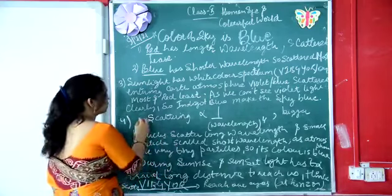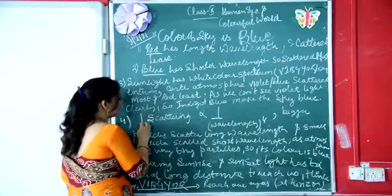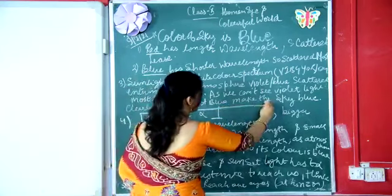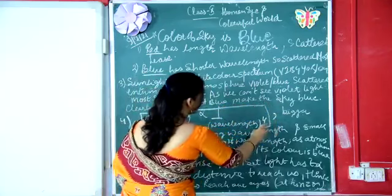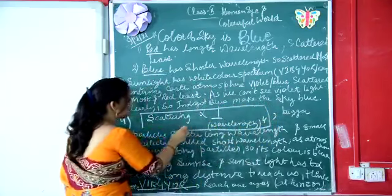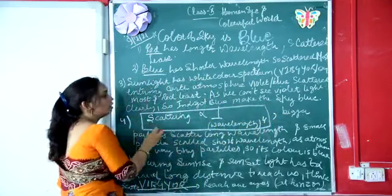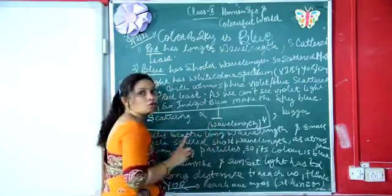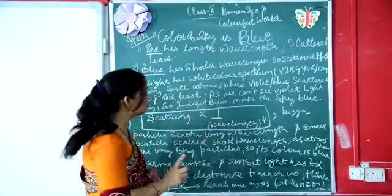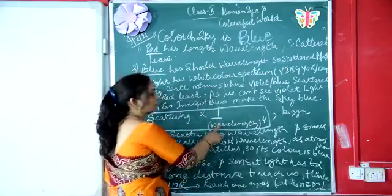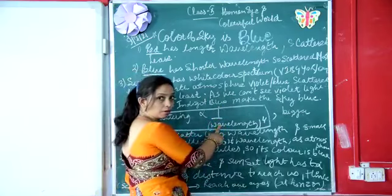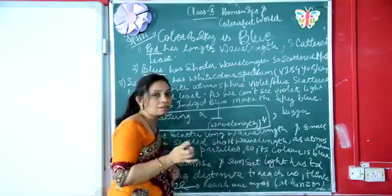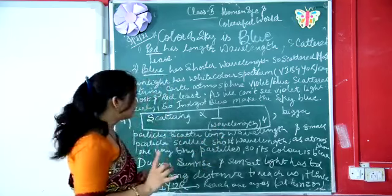This is defined by Rayleigh's criteria, which says that scattering is inversely proportional to the 4th power of wavelength. This means that if the wavelength is more — as in the case of red — the scattering will be least.